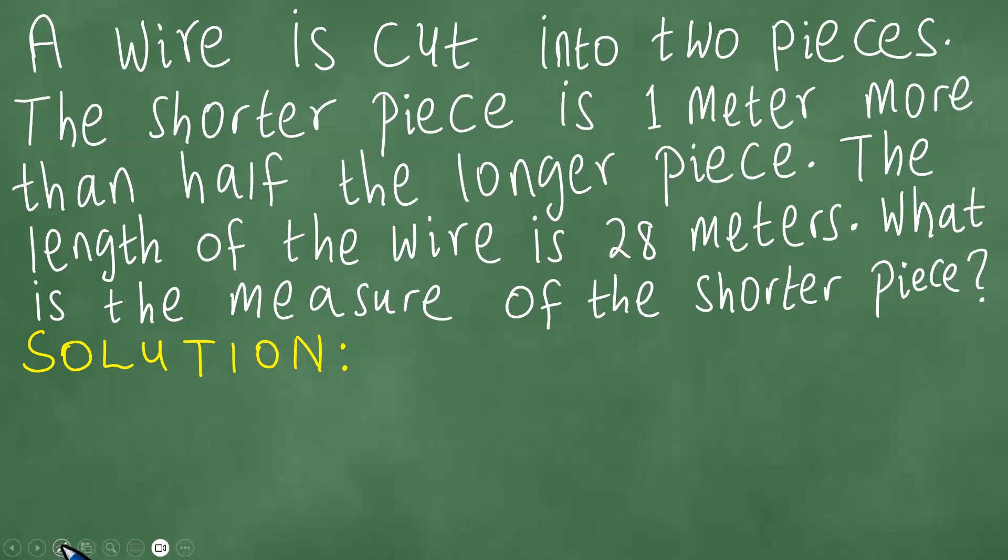Right, we have this word problem here and we want to solve this word problem. So let's get started. A wire is cut into two pieces. The shorter piece is one meter more than half the longer piece. The length of the wire is 28 meters. What is the measure of the shorter piece?